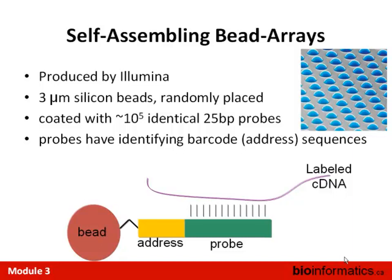Instead of replicating different parts of the gene many times, you're replicating the same part many times. This kind of technology is very prone to SNPs — it doesn't have the redundancy in terms of sequence differences that other technologies have. Typically it's 70,000 unique sequences per 20,000 genes in the genome — about two to three per gene, most of which will be splice variants.